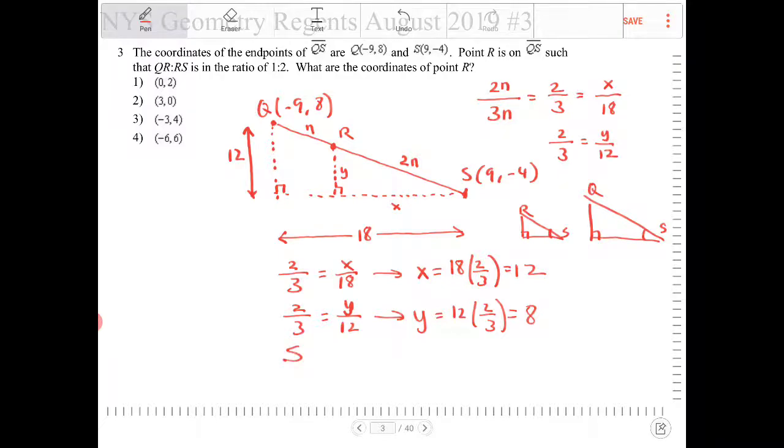So where will that land me? So R will therefore equal to, I want to go to the left from 9. I want to travel to the left. So I want to do 9 minus 12. And then from negative 4, I want to go up. So I want to go add 8.